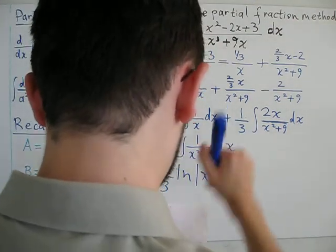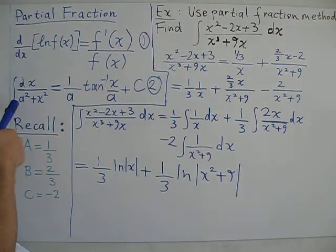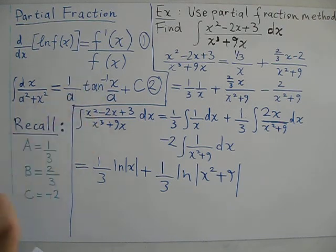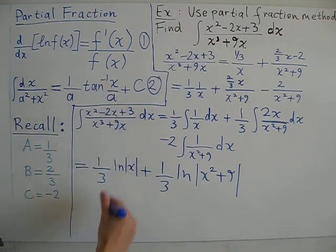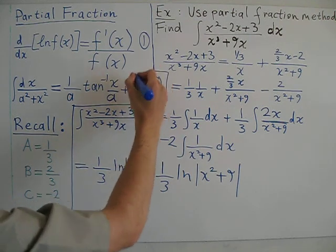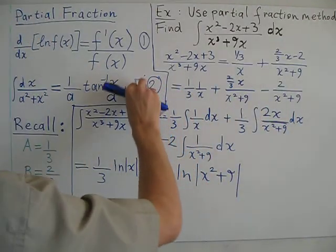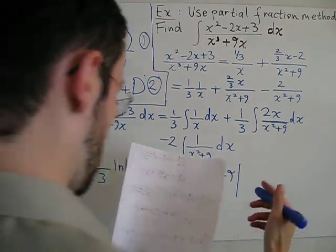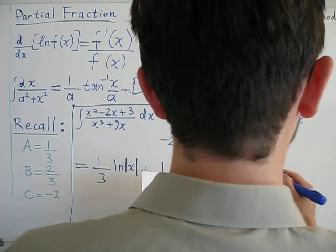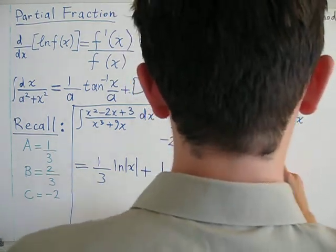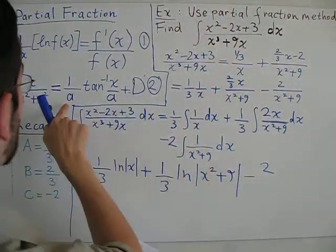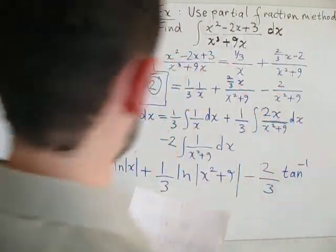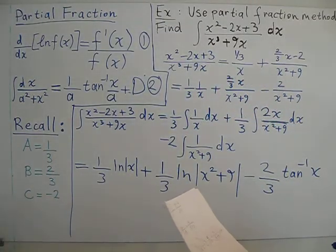And for the third one, we shall make use of this second integral equation. The integral of dx over a squared plus x squared is 1 over a tan inverse of x over a plus an arbitrary constant. So in this case, 2/3, we shall simply end up with 2. And a here is going to be equal to 3. So 1 over a, so 2 over 3. This is going to be tan inverse of x over 3.